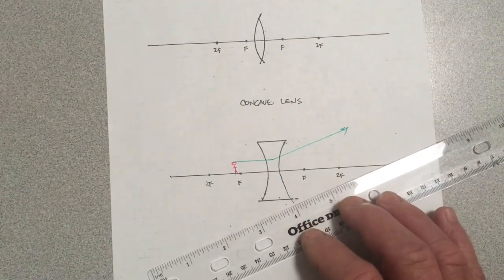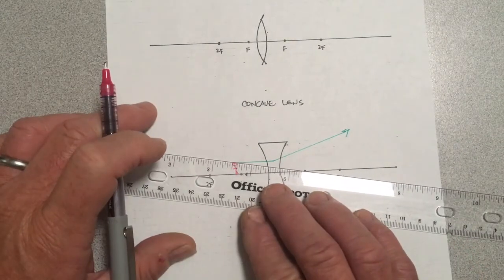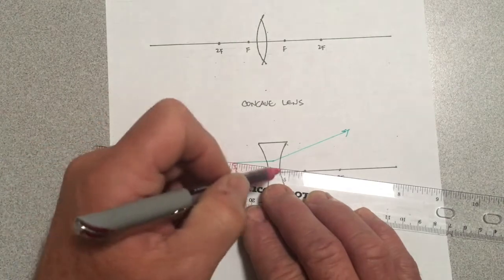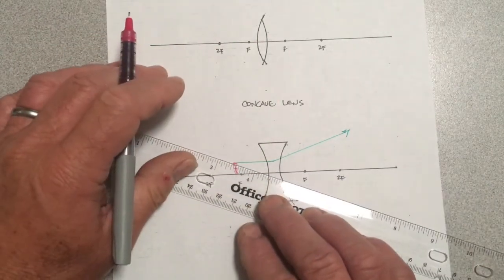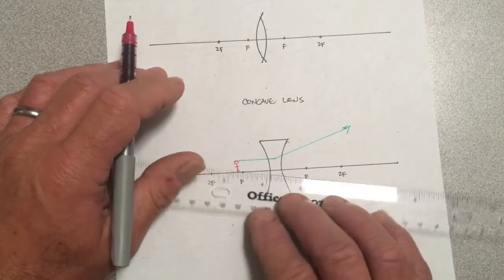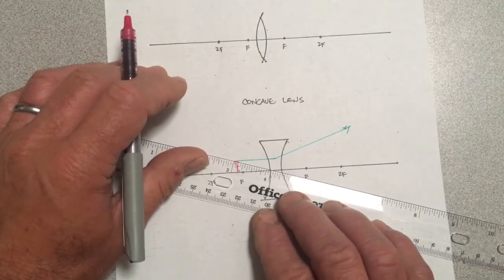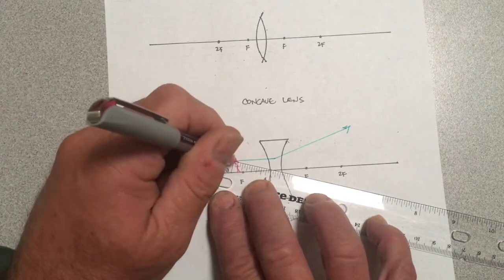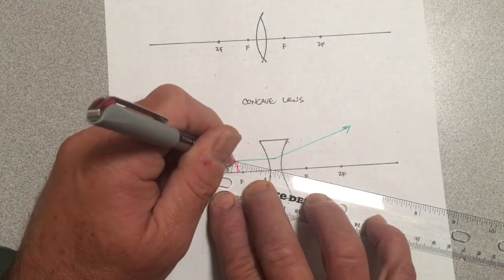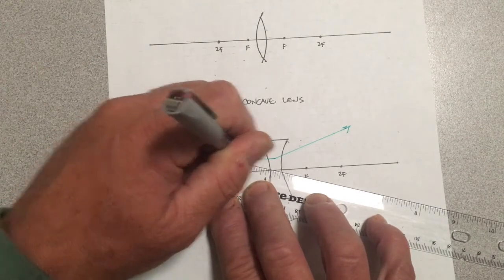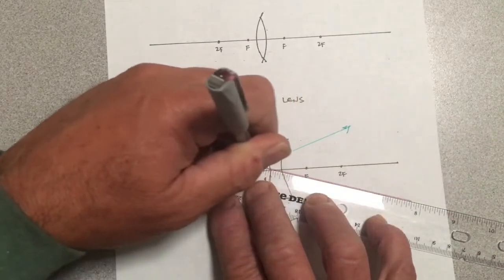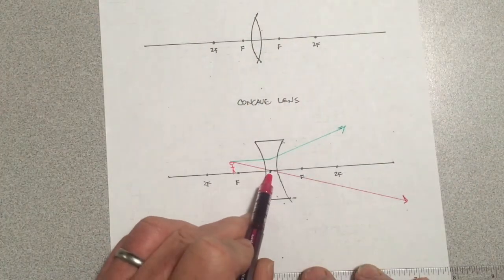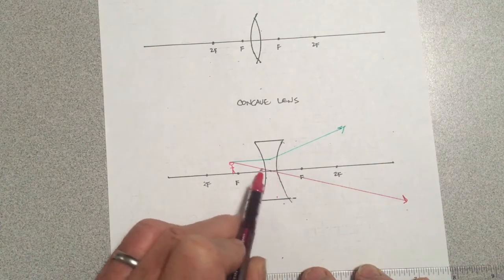Now the second ray, I typically go toward F, but a lot of books just go straight through the center of the lens. It doesn't really matter. In fact, I'm just going to do that because if you had to do this on a test, you're just better off making it easy on yourself. So a ray that goes right smack dab through the center of the lens, while it refracts on both sides, these portions are parallel. This is good enough.